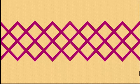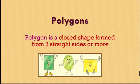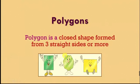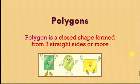What is a polygon? The polygon is a closed shape formed from three straight sides or more. As you can see in these shapes, I have a closed shape and all straight lines — no curves — and they are all closed. The minimum number of sides in a polygon is three.